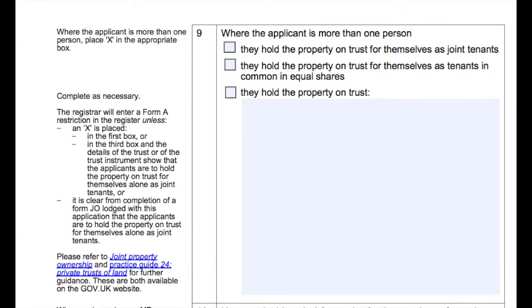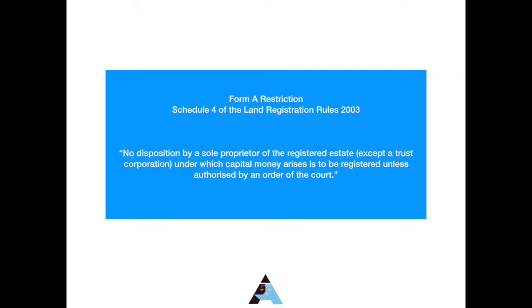When the applicant is more than one person — in our scenario the beneficiaries Mark and Ann — we must tell the Land Registry how the applicant will be holding the property when the transfer is completed. Our instructions are that Ann and Mark will hold the property as tenants in common in equal shares, and therefore box two must be ticked. Upon registration the registrar will enter a Form A restriction on the register, and the effect of this restriction is that a disposition in future by either Ann or Mark alone cannot be registered.